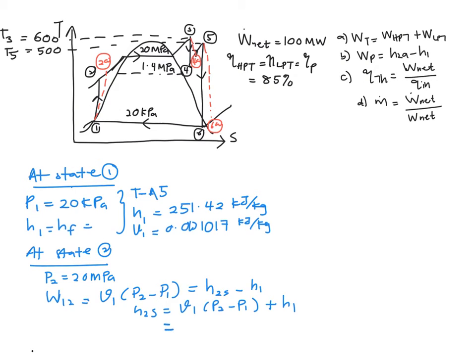You will get your H2s is equal to V1(P2 - P1) plus with your H1. And again you need to be careful with your value because your P2 is 20 megapascal. So if you are going to have the equivalent unit of kilojoule per kg, so your 20 megapascal will become 20,000 minus 20 plus your 251.42. And finally you will get your H2s is equal to 271.7397 kilojoule per kg.